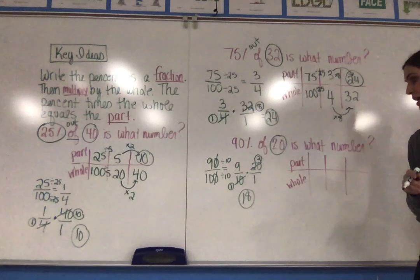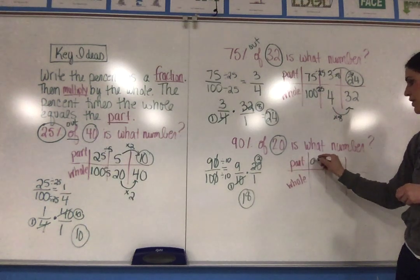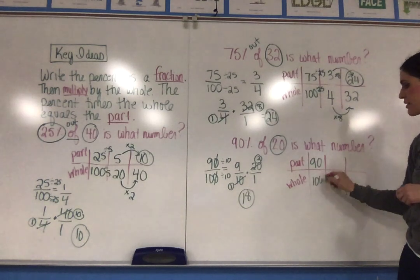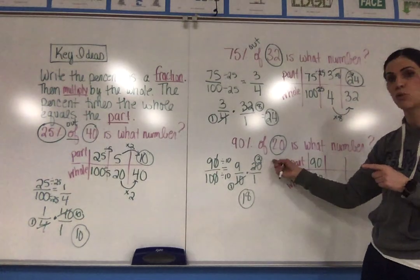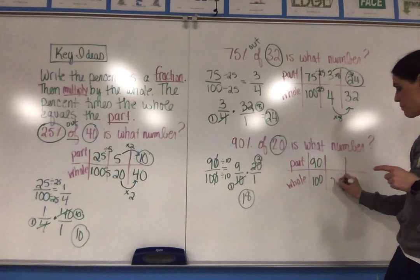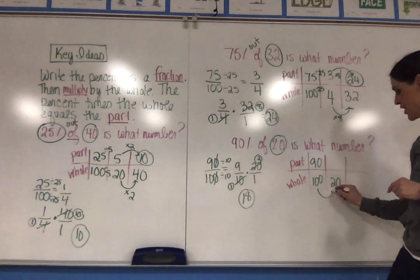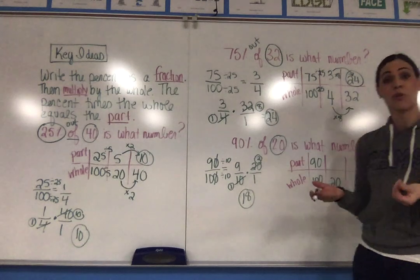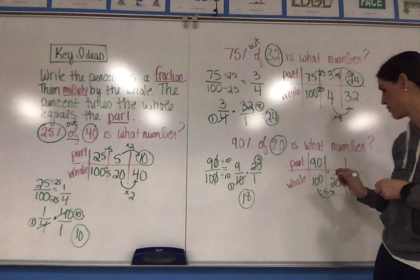Using the table method, again, I'm going to put 90 over 100. And this example is a little bit different than the first two, because if I look at 20 and compare it with 100, I can actually divide 100 by 5 to get 20. So there is a whole number I can divide by, so I don't need that additional ratio in my table for this example.